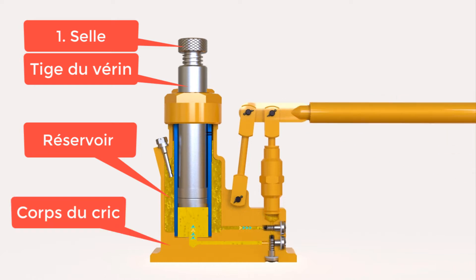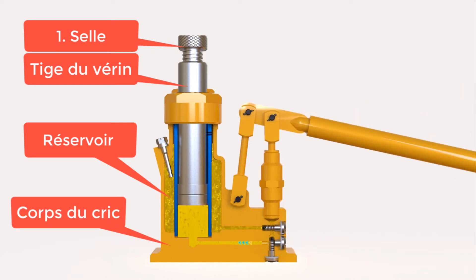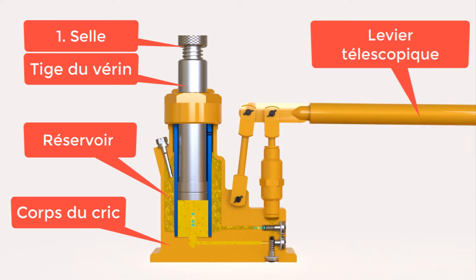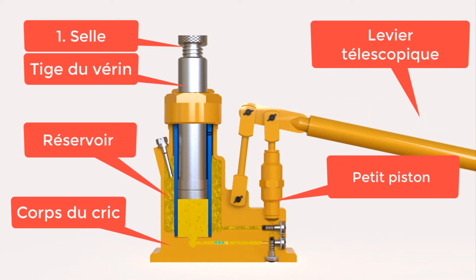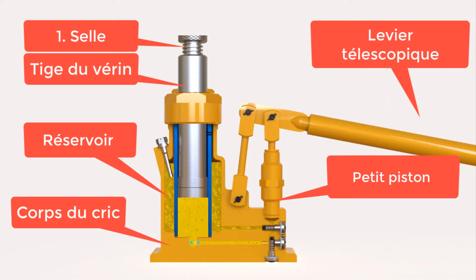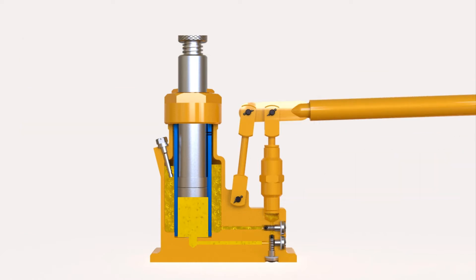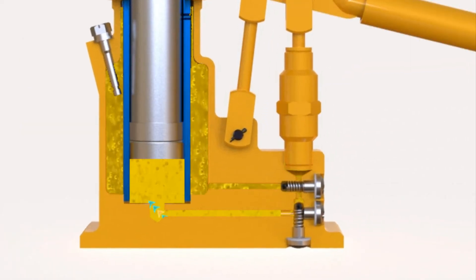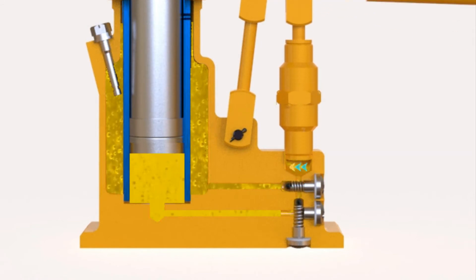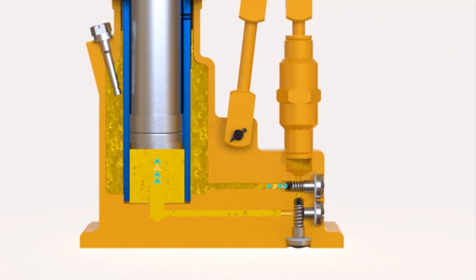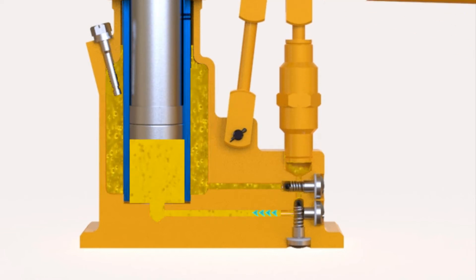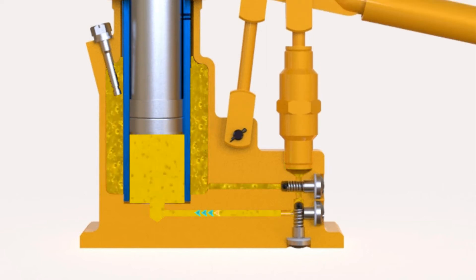The pressure chamber is supplied by a reservoir. When the lever goes up, the pressure chamber duct closes and the tank duct opens. As the lever moves down, the pressure chamber opens and the reservoir conduit closes, so liquid goes into the pressure chamber and pushes the piston up. The process is repeated several times until the crown reaches the appropriate height.